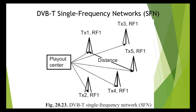Frequency synchronization is the easiest condition because frequency accuracy and stability had to meet high demands even in analog television. In DVB-T the transmitter RF is locked to the best reference available — that is a signal from the GPS, Global Positioning System. The signal from the GPS, which is available throughout the world, is now also used for synchronizing the transmitting frequency of a DVB-T single frequency network.